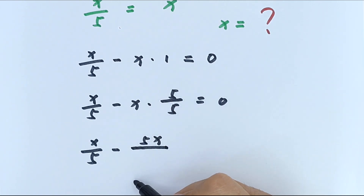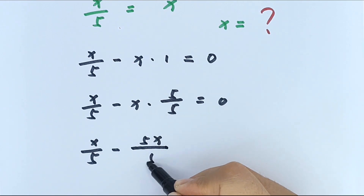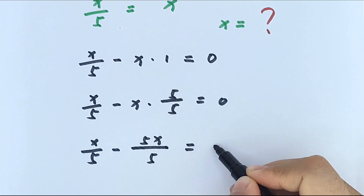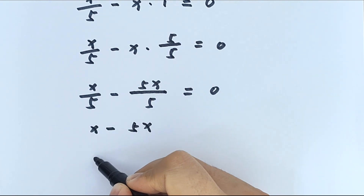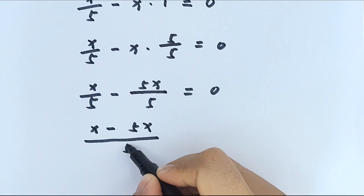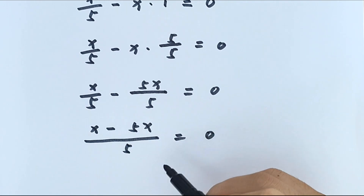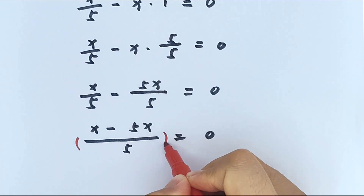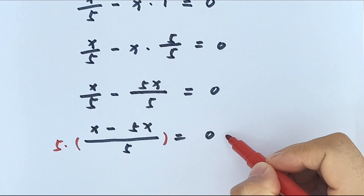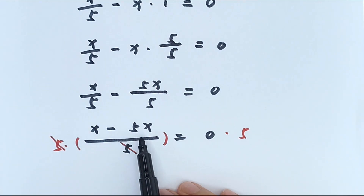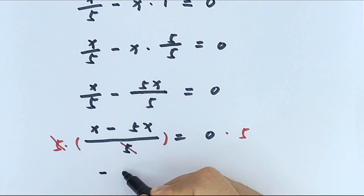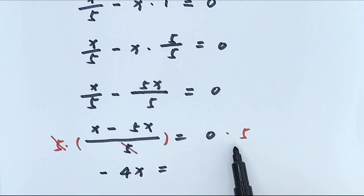It will be x over 5 minus x times 5, which is 5x, then divided by 5 equals 0. So x minus 5x divided by 5 equals 0. We multiply by 5 on both sides — this cancels — so x minus 5x equals negative 4x equals 0 times 5, which is 0.